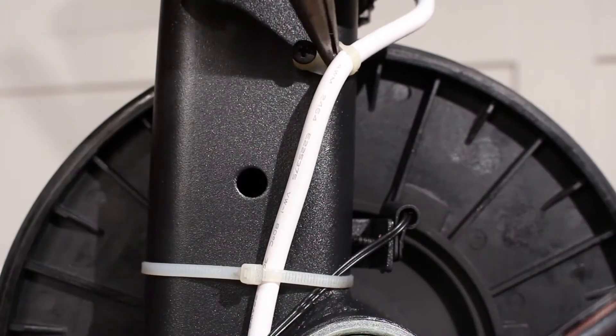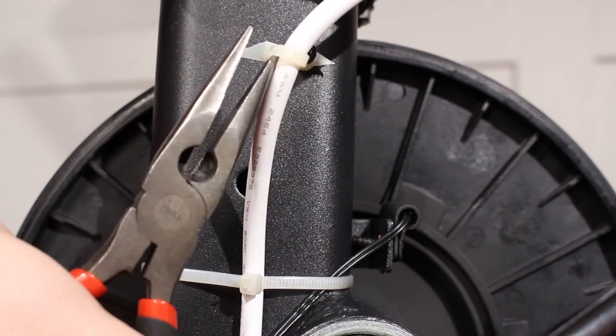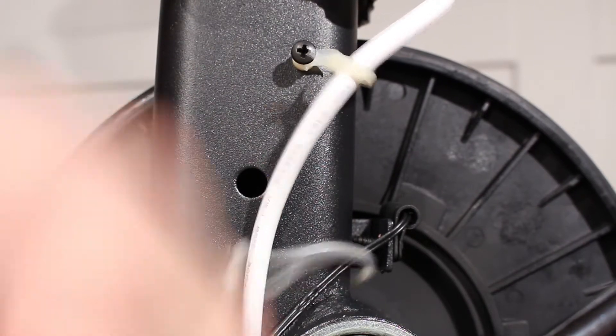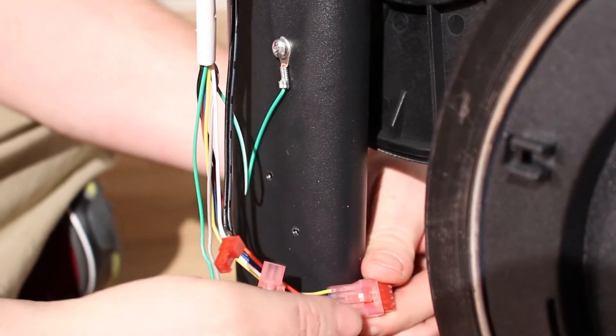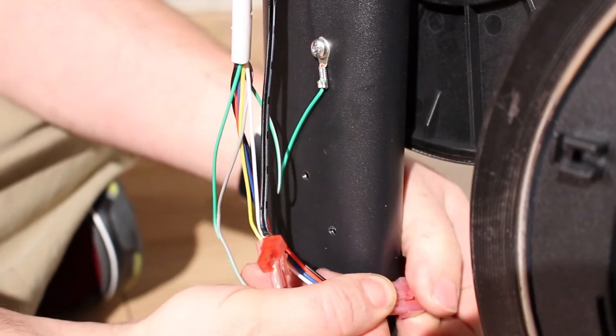Remove the zip ties securing the damaged main wire. Then disconnect connectors on the lower end of the main wire and remove the ground screw.